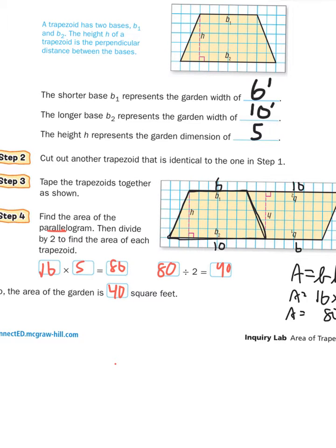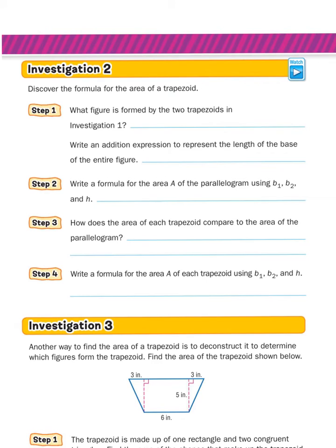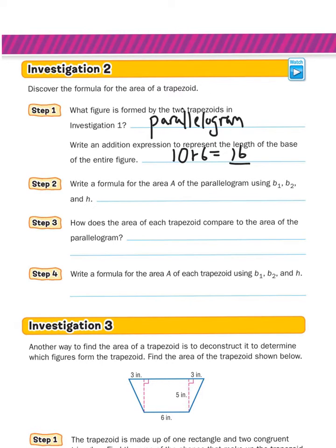Now Investigation 2 says: discover the formula for the area of the trapezoid. We've been using this formula for a while, so most of you probably know it, but we're going through these steps so you can see where the formula comes from. Number one: what figure is formed by the two trapezoids in Investigation 1? When we put the two trapezoids together, we got a parallelogram. Number two: write an addition expression to represent the length of the base of the entire figure. We have ten plus six equals sixteen for the entire base.